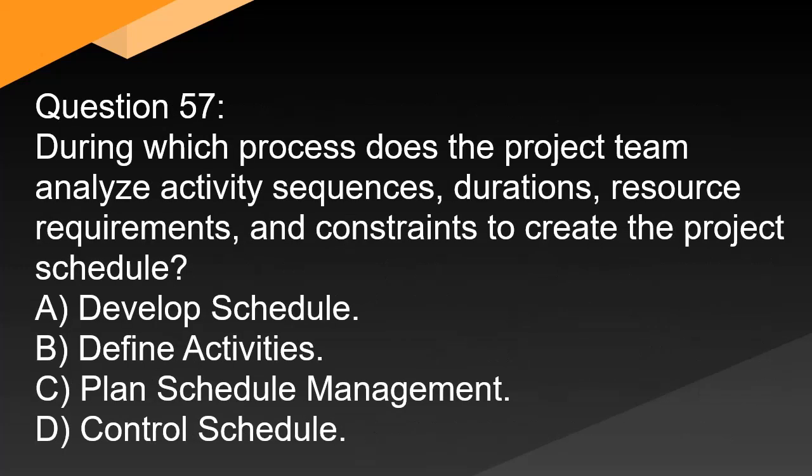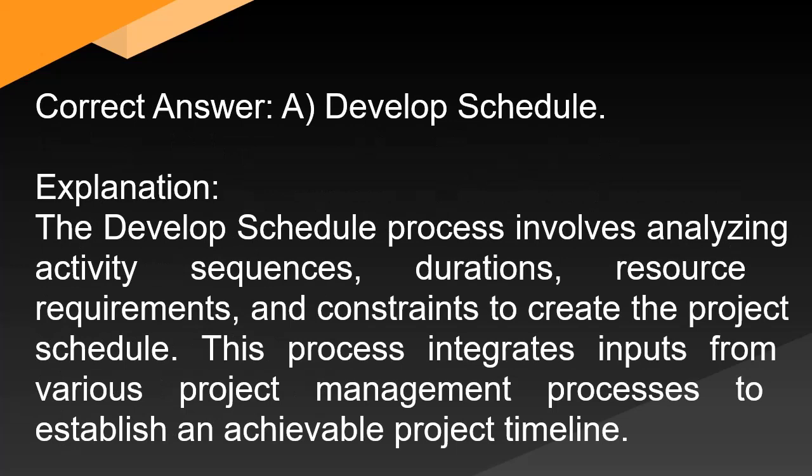Question 57: During which process does the project team analyze activity sequences, durations, resource requirements, and constraints to create the project schedule? A. Develop schedule. B. Define activities. C. Plan schedule management. D. Control schedule. Correct answer: A. Develop schedule. Explanation: The develop schedule process involves analyzing activity sequences, durations, resource requirements, and constraints to create the project schedule. This process integrates inputs from various project management processes to establish an achievable project timeline.